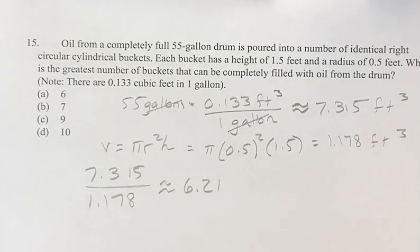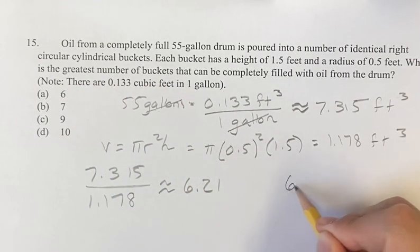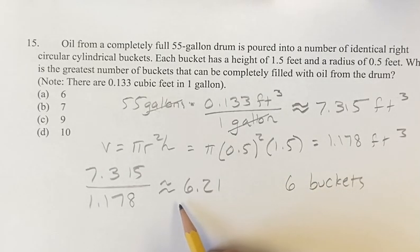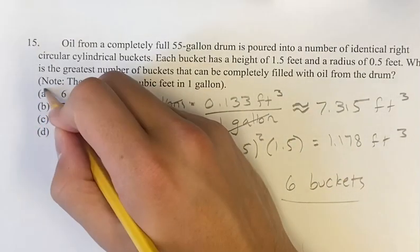Again, roughly doesn't really matter because we're not near any whole numbers. We're going to say the greatest number of buckets that can be filled is 6 buckets because 6.21 means you can fully do 6 buckets, but you're not going to have enough for 7, so 6 buckets is your answer.